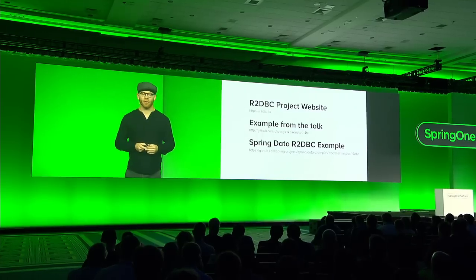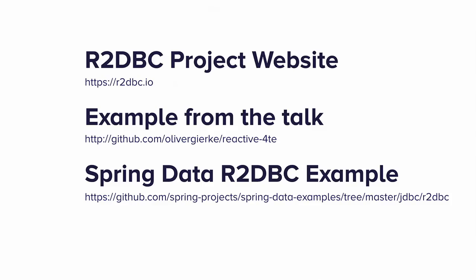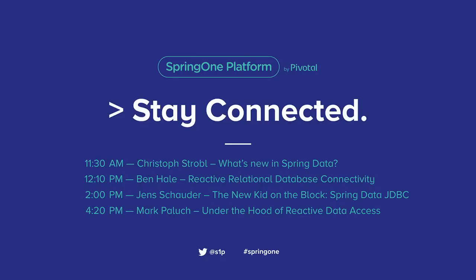Find out more about the project at R2DBC.io. The example code that Rossen and I talked about is up on my personal GitHub for you to play with, and we also have R2DBC examples in the canonical Spring Data examples repository. If you want to learn more at the conference, I highly recommend joining Ben Hale's session — sorry for flooding your room, Ben. The entire data team is on site: Christoph, Jens, and Mark are going to cover all the other data topics, with Jens covering the new JDBC stuff. That's it — thank you very much.